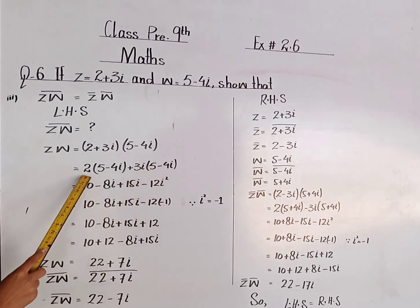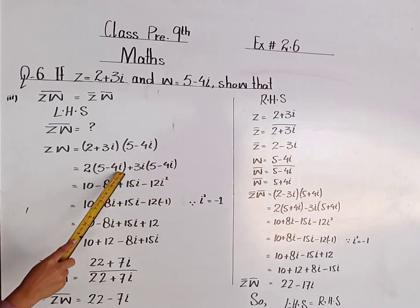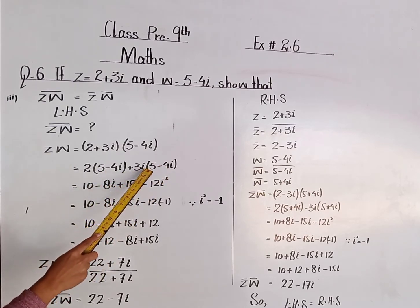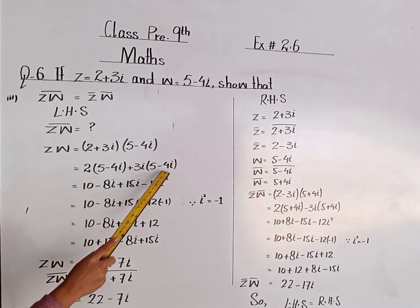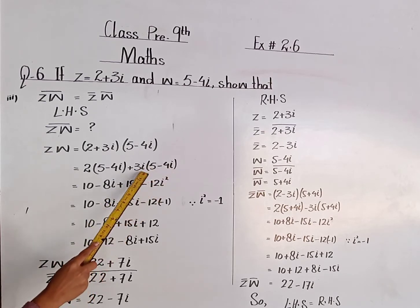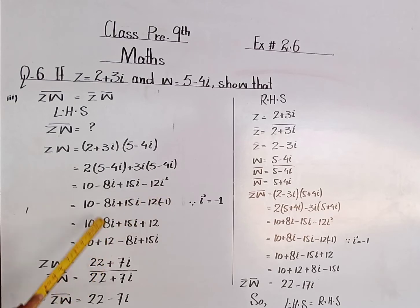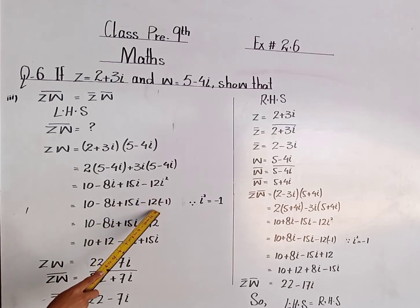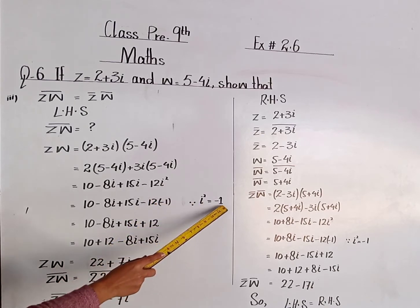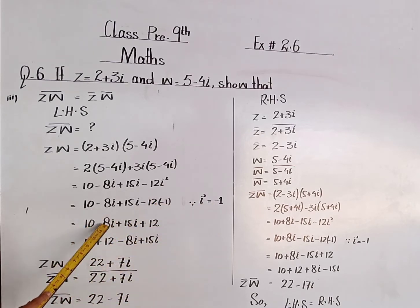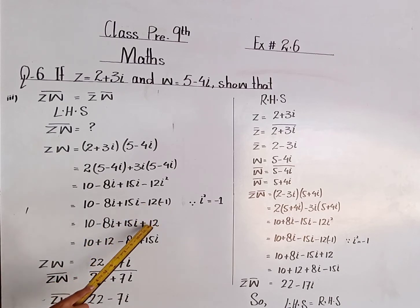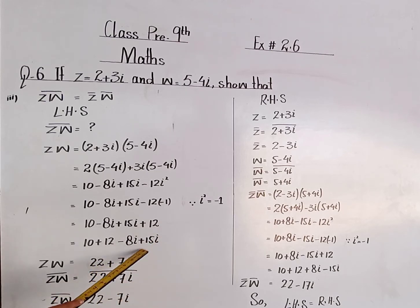2 times 5 is 10, minus 2 times 4 is 8 iota, plus 3 times 5 is 15 iota, plus minus 3 times 4 is 12 iota squared. That gives 10 minus 8 iota plus 15 iota minus 12 into minus 1 — because iota squared is equal to minus 1. So 10 minus 8 iota plus 15 iota, minus minus is plus, so plus 12.